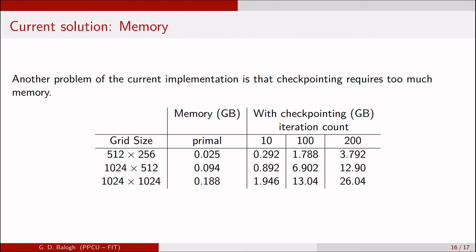In conclusion, we successfully computed adjoints of applications on CPUs in a parallel manner and showed promising runtime results and performance. However, the current implementation suffers from high memory pressure. We're currently working on an implementation that will recompute loops and only save datasets at certain points to the tape. With recomputing, we will restore the intermediate states. Thank you for your attention.